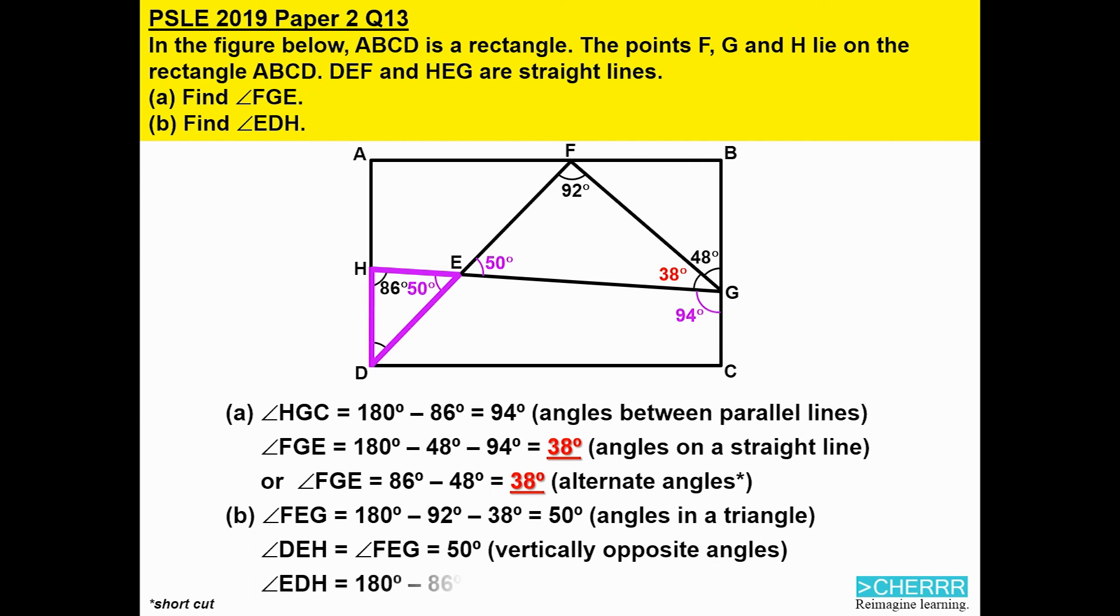Finally, we can look at the triangle DHE. In this triangle, we can now solve for angle EDH. All we need to do is take 180 minus 86 and minus 50. We will get 44 degrees.